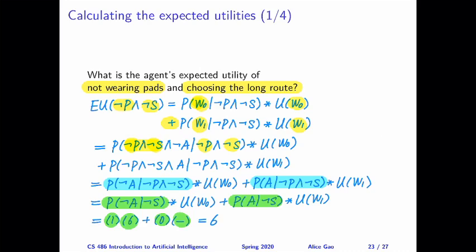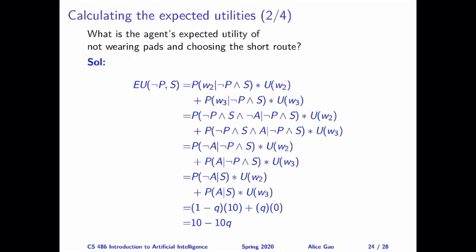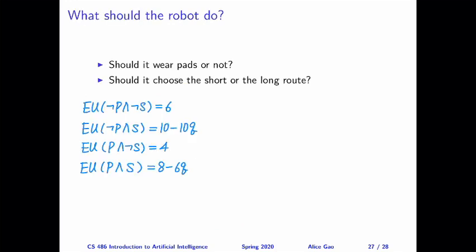I won't discuss the solutions to the other three cases in this video — you can check the annotated slides. Note that some expressions will involve Q, which is the probability that an accident happens on the short route. So the expected utility may be a function of Q, and that's okay. The four expected utilities are provided here for your reference.